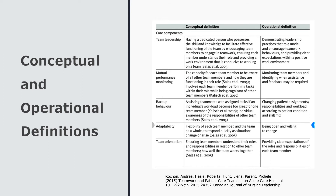We talk of conceptual and operational definitions. A conceptual definition is the theoretical meaning of a concept. An operational definition specifies what the researcher must do to measure the concept and collect the needed information. Kerlinger describes it as assigning meaning to the construct or variable by specifying the activities or operations necessary to measure it. It is like the instruction manual for the researcher. The operational definition serves as a bridge from concepts to the observations.